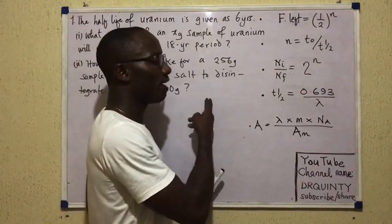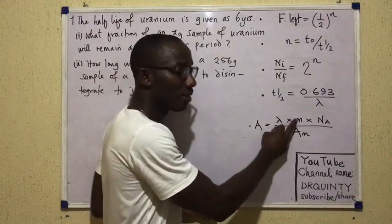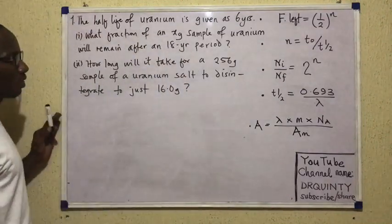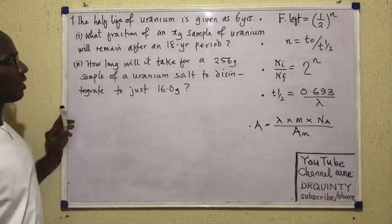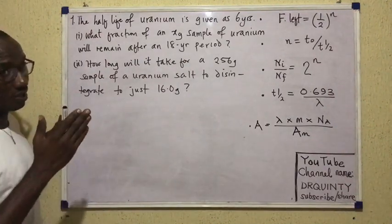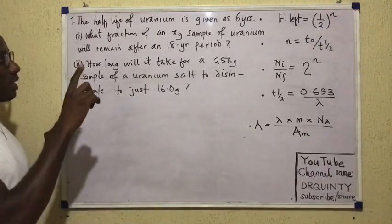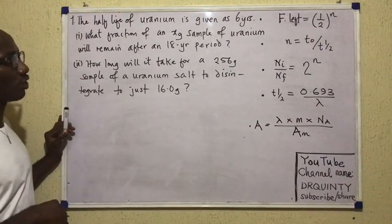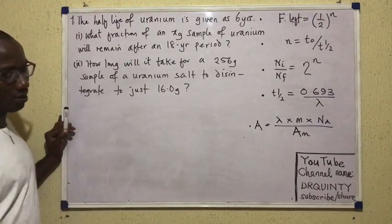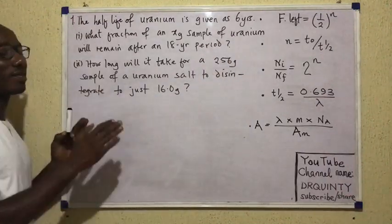Over to this side, there are two questions waiting for us. The opening statement says the half-life of uranium is given as six years. Based on that statement, the first question says: what fraction of an X-gram sample of uranium will remain after an 18-year period? In the question, we're given six years, clearly labeled as half-life, and the only other time given is 18 years.